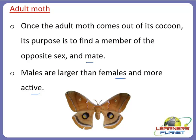Once the adult moth comes out of its cocoon, its purpose is to find a member of the opposite sex and mate. Males are larger than females and more active, so they flap their wings to attract females. Within 24 hours of mating, the male moth dies, while the female lays abundant eggs — after which she also dies — and thereon a new silkworm life cycle begins.